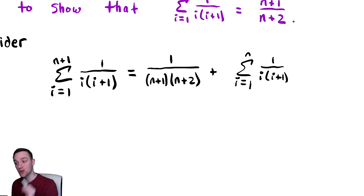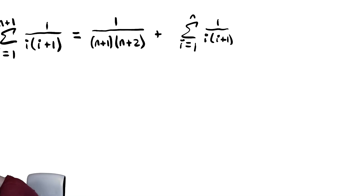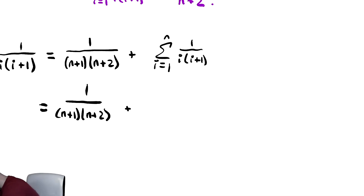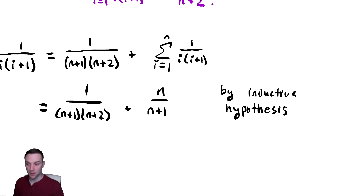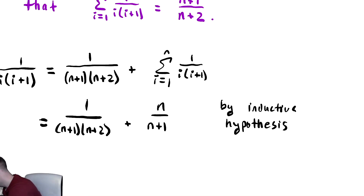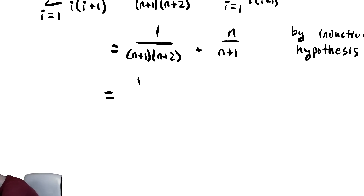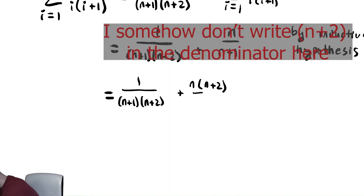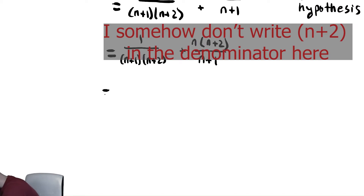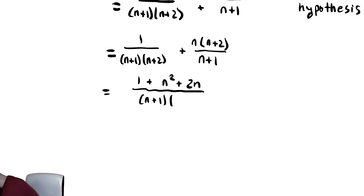Notice that first term is plugging n plus 1 into 1 divided by i times i plus 1, and we reduce the top bound of the summation because we've peeled off that single term. Just as we saw in the past, we're going to use our inductive hypothesis to rewrite that summation. So we have 1 over n plus 1 times n plus 2, plus by inductive hypothesis the summation equals n divided by n plus 1. Now we have an algebra problem: we need to simplify this expression to equal n plus 1 divided by n plus 2. So this equals 1 divided by n plus 1 times n plus 2; I need to multiply the second fraction by n plus 2 to get a common denominator. I can then add these and get 1 plus n squared plus 2n, all divided by n plus 1 times n plus 2.